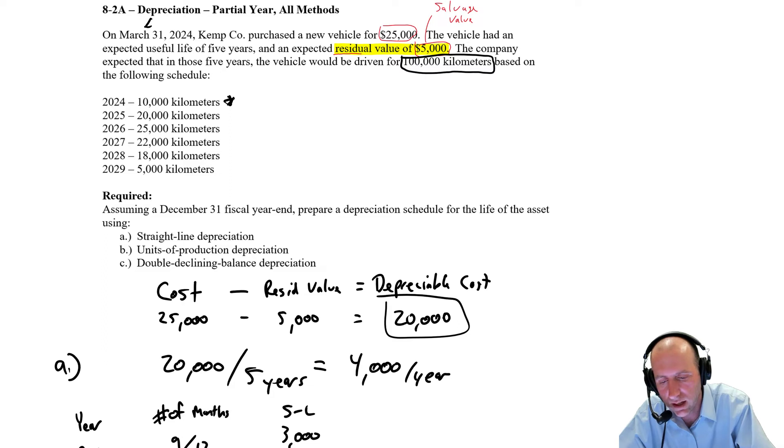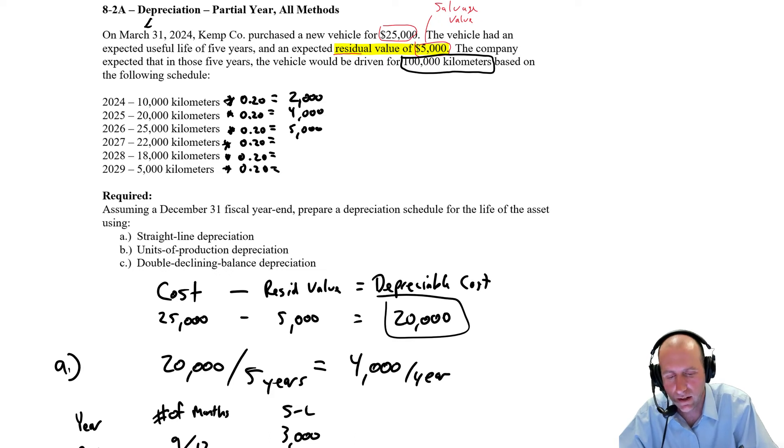So in this case, 10,000 times 0.20, and each of these numbers times 20 cents, right? I'm just taking my kilometers to be driven times by 20 cents. So 10,000 kilometers times 20 cents is $2,000. 20,000 kilometers times 20 cents is $4,000. 25,000 kilometers times 20 cents is $5,000. 22,000 kilometers times 20 cents. Oh, I was doing so well with the math in my head. I think that's $4,400. 18,000 kilometers times 20 cents is $3,600.